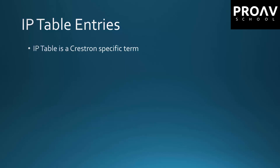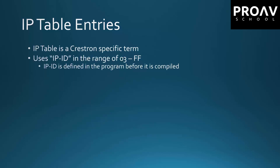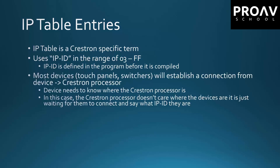IP table entries is a Crestron-specific term. It's basically how the device talks to the processor, or how the processor talks to external devices via IP. So it's not necessarily a port — it's more of an identifier. IP IDs come in the range of 03 to FF, and they're defined in the program by the programmer before it's compiled. So the programmer should be able to give you a list of what the IP IDs should be. Most devices like touch panels and DM switchers will establish a connection from the device to the Crestron processor.